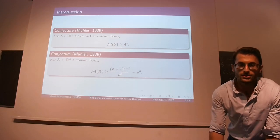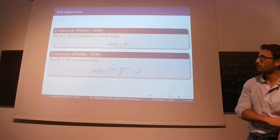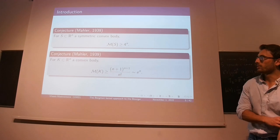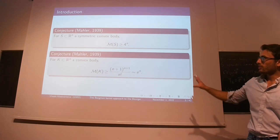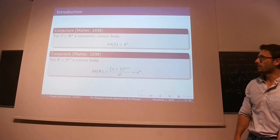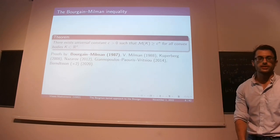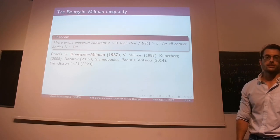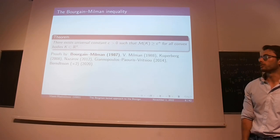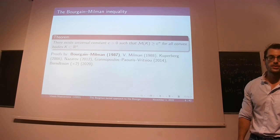There are these famous conjectures by Mahler, like 1939, that for a symmetric convex body, the Mahler volume is bounded below by 4^n, and in general it should be bounded below by the Mahler volume of the simplex translated so that it's centered at the origin, which is asymptotically e^n. These are still open, but there is a theorem first proved by Bourgain and Milman in 1987, that at least there is some constant that doesn't depend on dimension so that the Mahler volume is bounded below by c^n for all convex bodies and all dimensions. There are several proofs: Milman in 1988, Kuperberg, Nazarov, Giannopoulos, Paouris and Ricciò, and two proofs by Berndtsson recently.